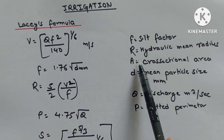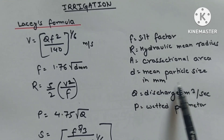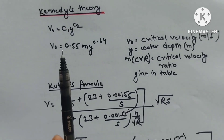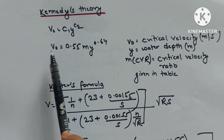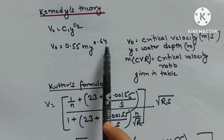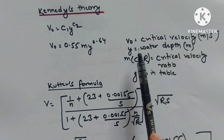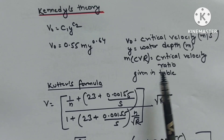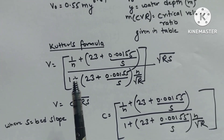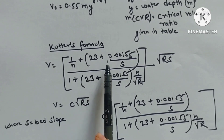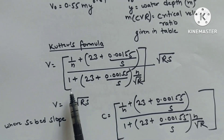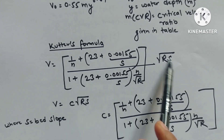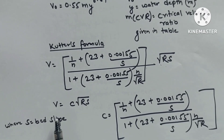Variables: f is still factor, R is hydraulic mean radius, A is cross-sectional area, d is mean particle size in mm, Q is discharge in m³/s, P is wetted perimeter. Kennedy's theory: V₀ = C₁·y^C₂ = 0.55m·y^0.64, where V₀ is critical velocity in m/s, y is water depth, m is CVR (critical velocity ratio). Chezy's formula: V = (1/n + 23 + 0.00155/S)/(1 + (23 + 0.00155/S)(n/√R)) × √(RS), and V = C√(RS).